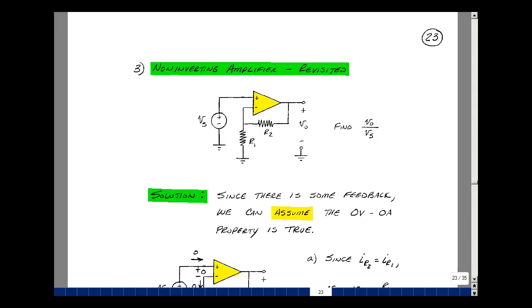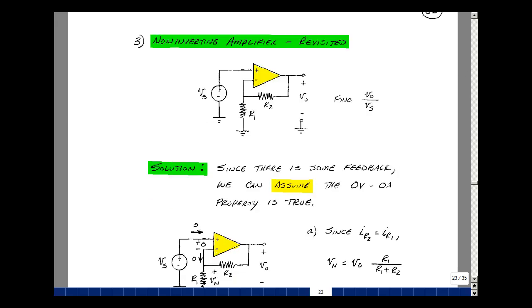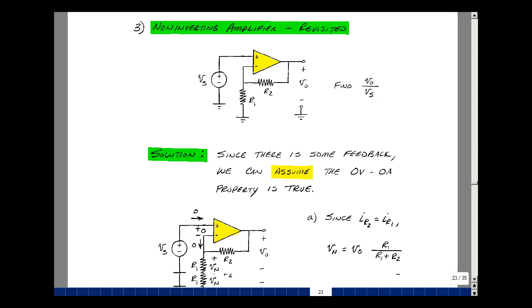In our last lesson, we took a look at the operational amplifier and developed a technique called no voltage, no current. Let's apply this to the non-inverting amplifier. If there's feedback from the output to the input and the output is stable, then the voltage across here is driven to zero. So let's apply that to our analysis.